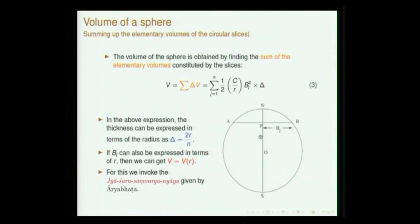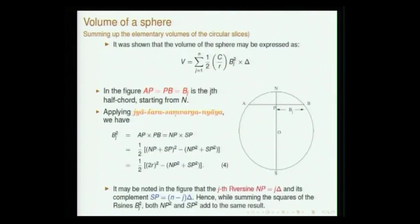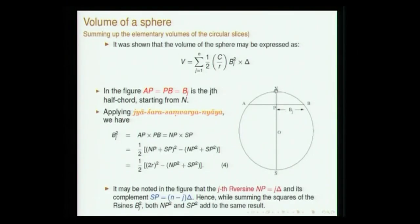Recalling the nyaya: 'vrte sharasambargaha ardhajya vargaha sakhaludhanu shoho' — so A_E² = D_E · E_B, where A_E is the Bhuja. In this problem, since the sphere is sliced into segments of equal thickness δ, if this is the j-th slice from point N, then P_B² = N_P · S_P. Here N_P + S_P = 2r. Furthermore, N_P = j·δ and S_P = (n−j)·δ.